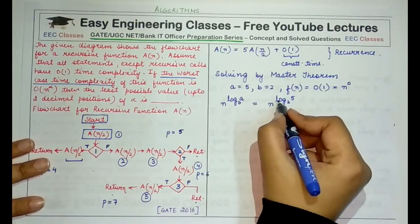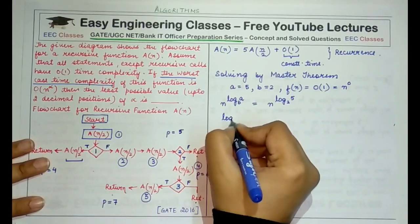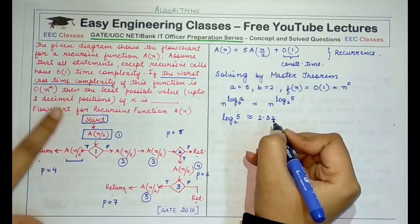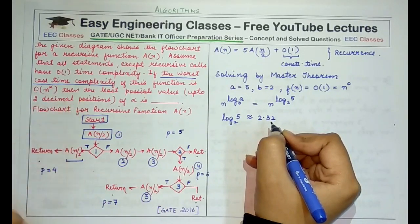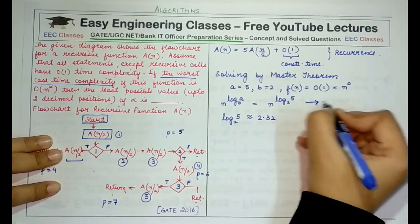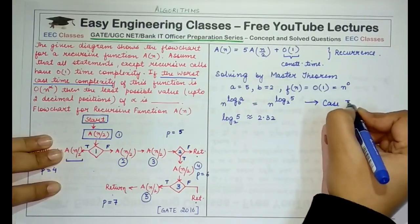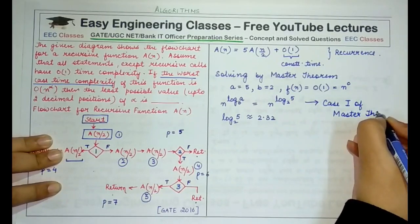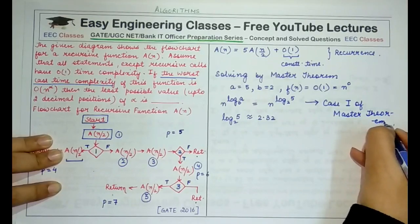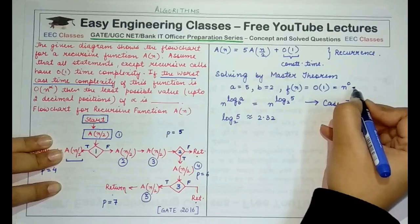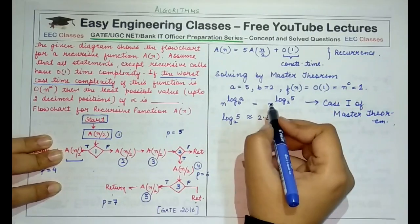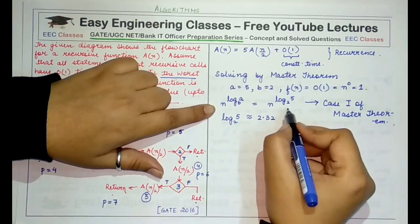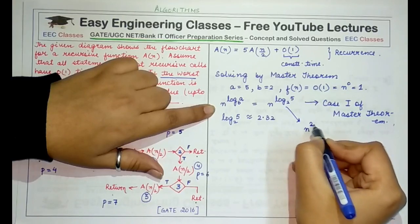So the value log of 5 base 2 would approximately come out to be 2.321 something. So we can approximate this value that of log of 5 base 2 approximates to 2.32 because we are given that we have to find out the value to 2 decimal places. And since this is the first case of Master Theorem, case 1 of Master Theorem, because here we know that f(n) is n raised to power 0 which comes out to be a constant of 1.